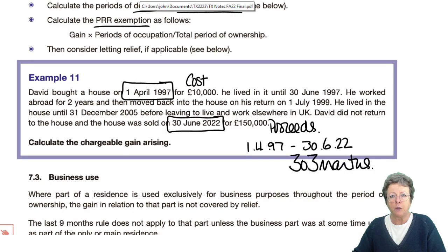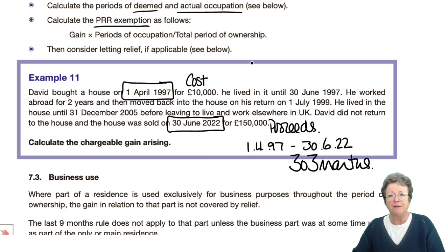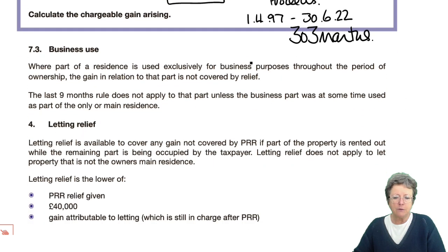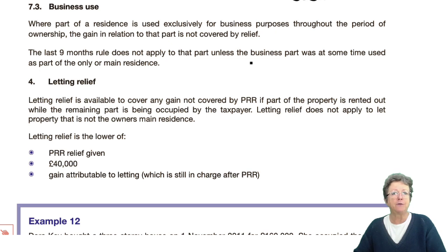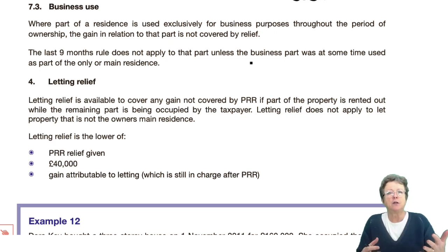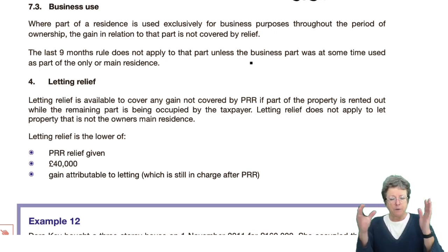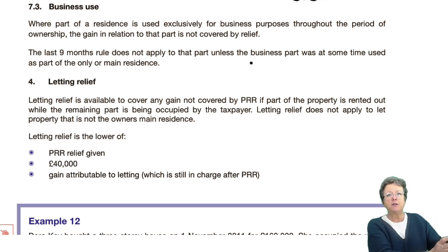They can ask this as a multiple choice question, but it can also come up as a big capital gains question — there have been times when a whole 10-marker is a list of capital gains items. Sometimes people use part of their residence exclusively for business purposes. If that's the case, you don't get relief for that part of the house. They'll normally tell you there are six rooms and one is used exclusively for business. The house must be for your occupation; if you're using part of it for business, you can't have the relief for residential occupation.